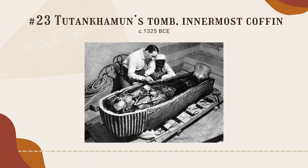Tutankhamun was born around 1342 BCE, the son of Akhenaten and a woman referred to as 'the Younger Lady' by the archaeologists who discovered her mummy. All three were members of the 18th royal dynasty during the New Kingdom period. Through DNA testing, it was determined that she was Akhenaten's full sister, meaning they were both children of Pharaoh Amenhotep III and Queen Tiye. Incest was quite common in the ancient Egyptian royal family because it mimicked the sacred union of Osiris and Isis. Due to this, Tutankhamun had a number of congenital issues, including a clubbed foot, cleft palate, and scoliosis.